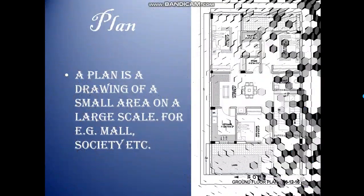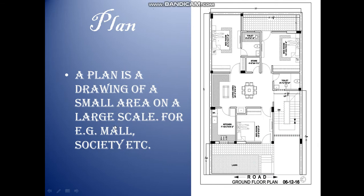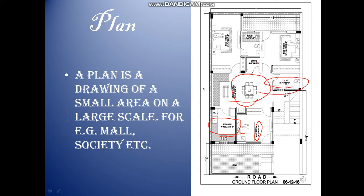Now comes a plan. A plan is a drawing of a small area on a large scale. For example, while constructing a mall, the architects draw a plan so that based on that they can construct it. As you can see in this plan of a house, this is the kitchen, this is a bedroom, this is the dining table, this is the washroom, this is the store, this is again a washroom, and these are more bedrooms. Such plans exist for houses and for malls as well, showing where the entry and exit are.